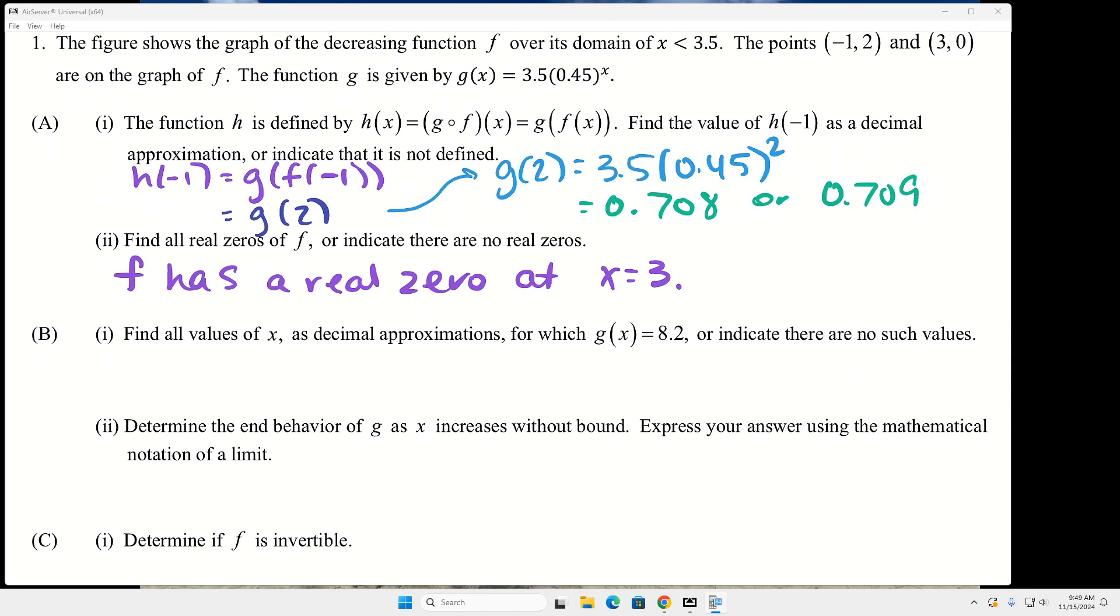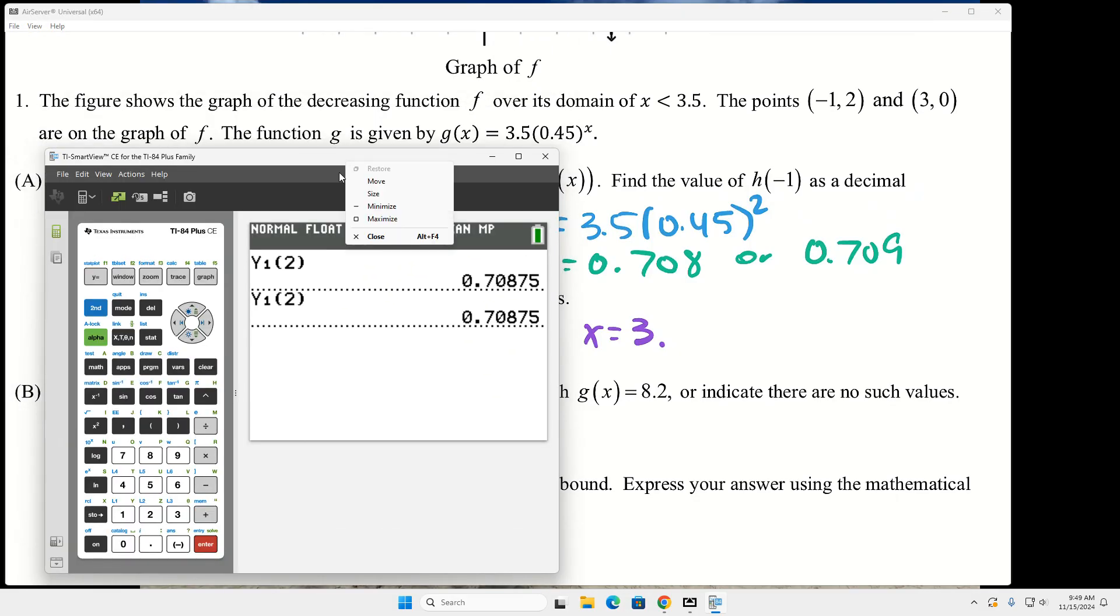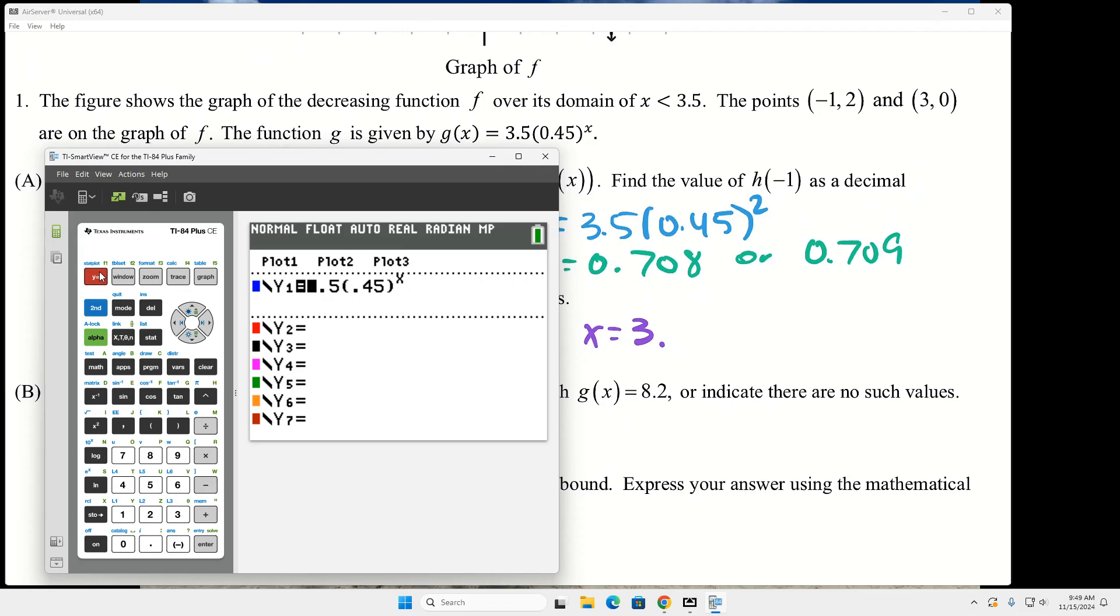And then for b, b part one says to find all the values of x as decimal approximations for which g of x is equal to 8.2. So g is the exponential function that we already put into y1. So what I would do on this one is in for y2, I would put 8.2, and then look at the graph. Now we can't just like estimate. We need to be really, really accurate. So you wouldn't trace here. What would you do to find that intersection point? Find the intersection.